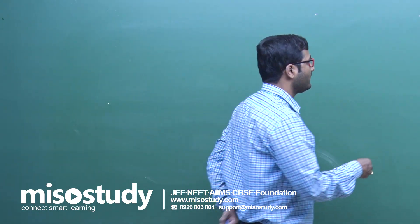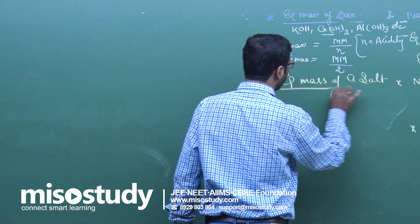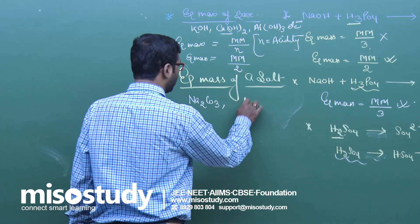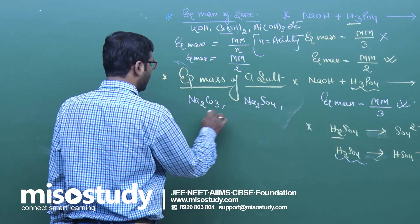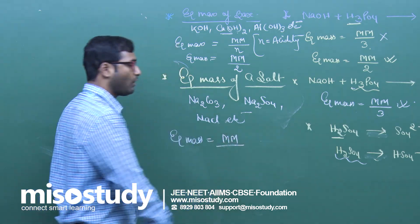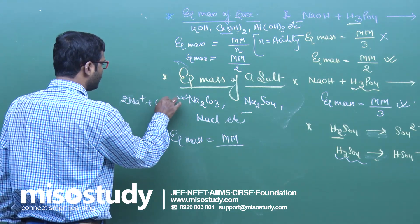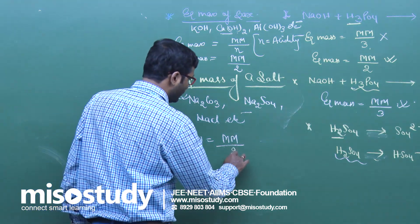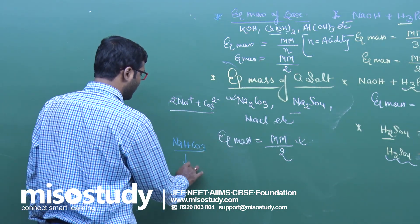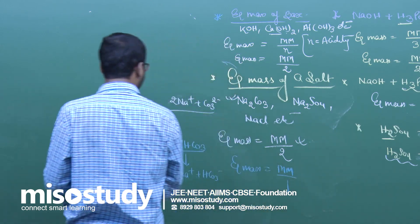For equivalent mass of a salt — for example Na₂CO₃, Na₂SO₄, NaCl — the formula is: equivalent mass = molecular mass / total number of positive charge (or total number of negative charge). Na₂CO₃ dissociates into 2Na⁺ + CO₃²⁻, giving total positive charge = 2, so equivalent mass = molecular mass / 2. For NaHCO₃, it dissociates into Na⁺ + HCO₃⁻, so equivalent mass = molecular mass / 1.